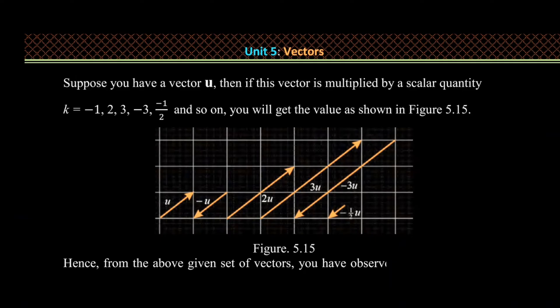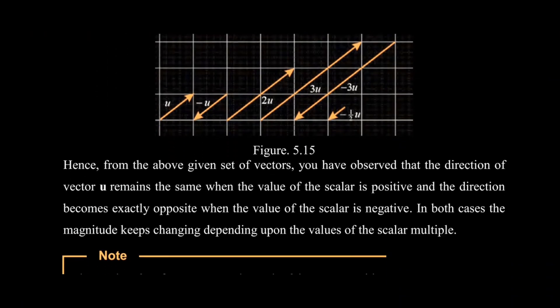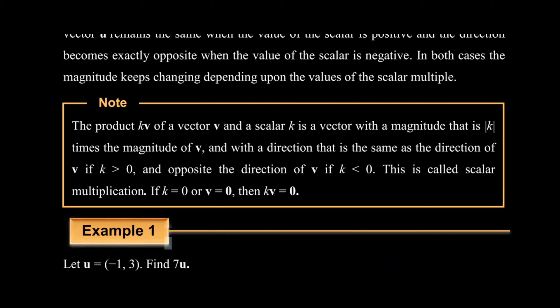Direction is the same. The other thing is b minus 1, which is the same. Magnitude is in the opposite direction. The opposite direction is the same. The product of k times vector v and scalar k is a vector with a magnitude that is the absolute value of k times the magnitude of v, and with a direction that is the same as the direction of v if k is greater than 0.